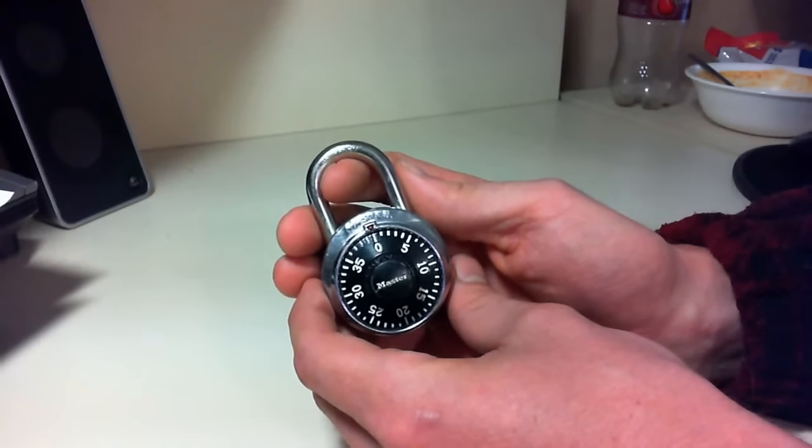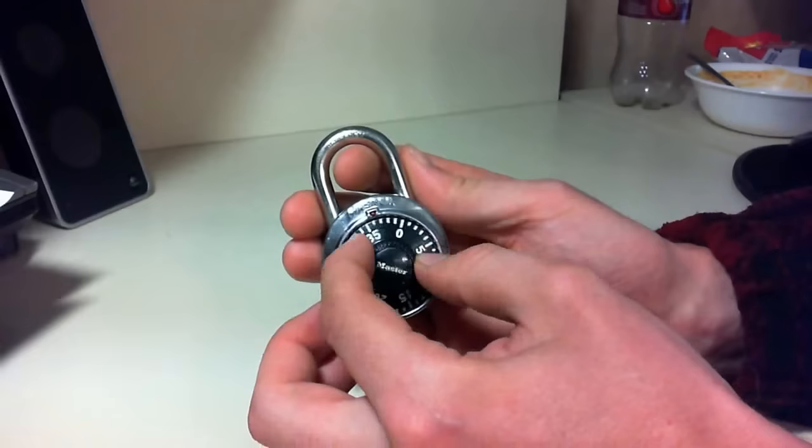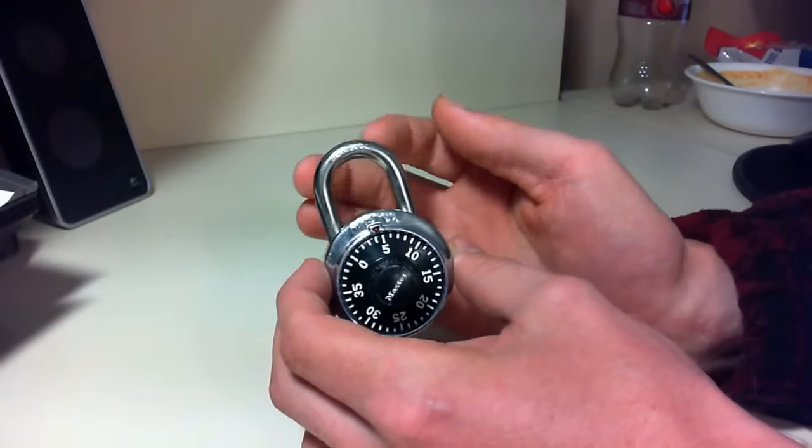So first let me start by orienting you to the lock. This is the combination dial, which you'll be spinning and manipulating in order to open it up. And then on the top, this piece is called the shackle.